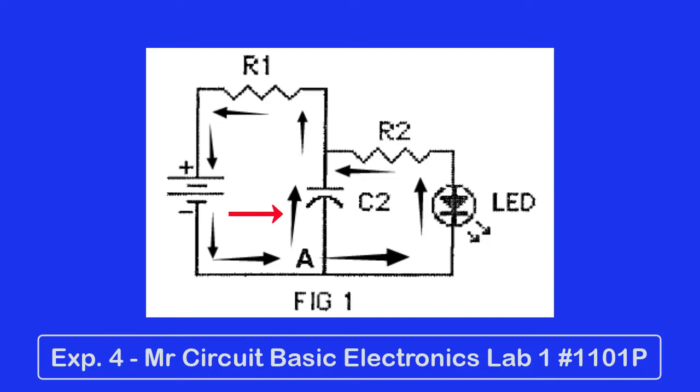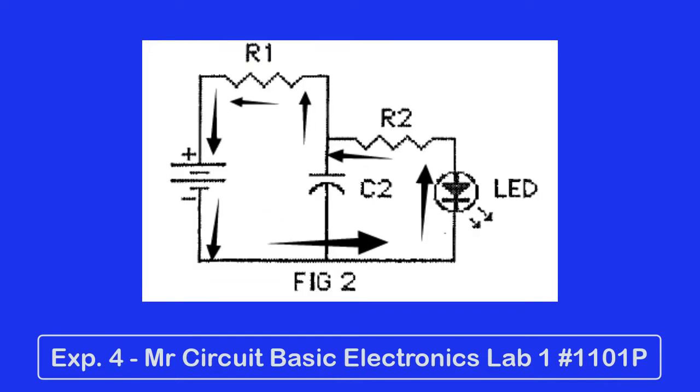Once C2 is charged, the current stops flowing in it. That's what we see in figure two of the schematic diagram. Notice the arrows.